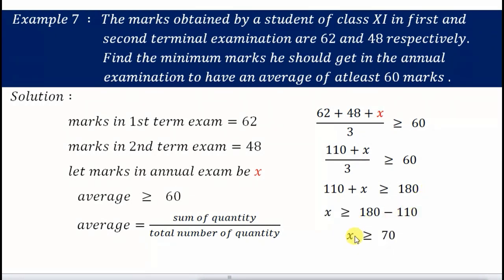So what will be X? X will be greater or equals to 70. So what should be your marks in the annual exam? You should at least score 70 marks in your annual exam to get the average of 60.